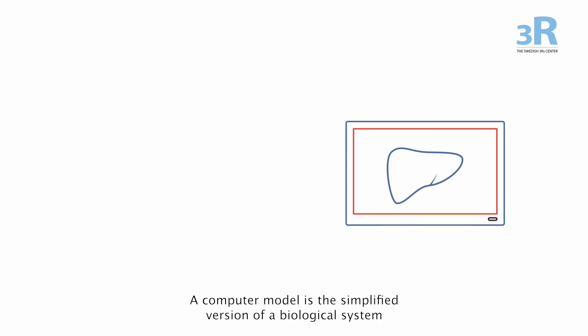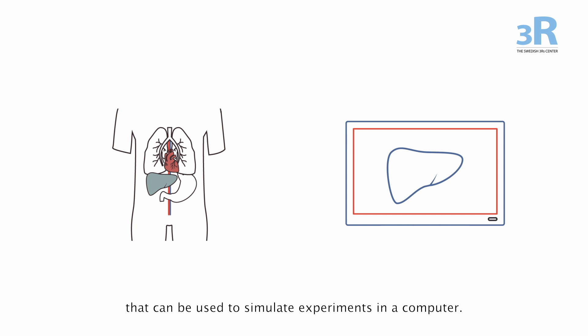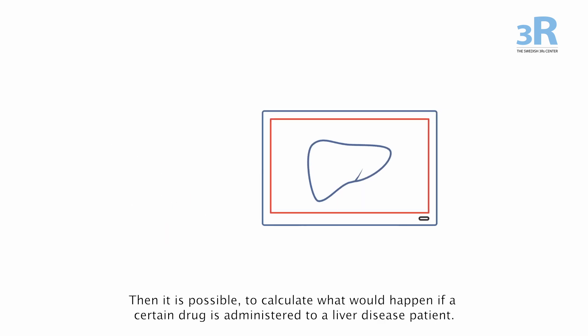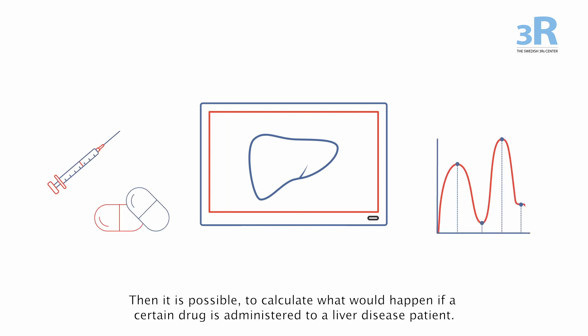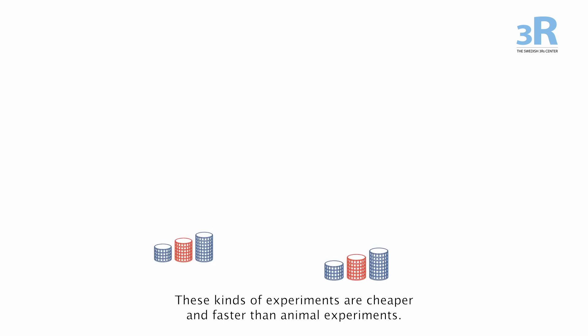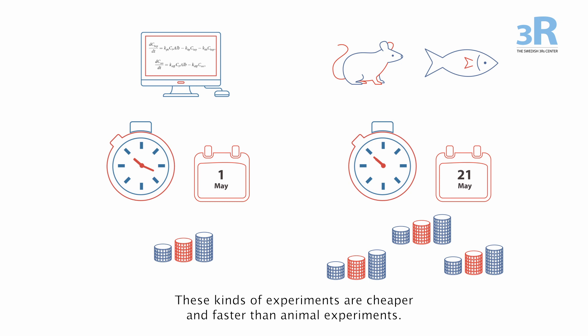A computer model is the simplified version of a biological system that can be used to simulate experiments in a computer. Then it is possible, for example, to calculate what would happen if a certain drug is administered to a liver disease patient. These kinds of experiments are cheaper and faster than animal experiments.